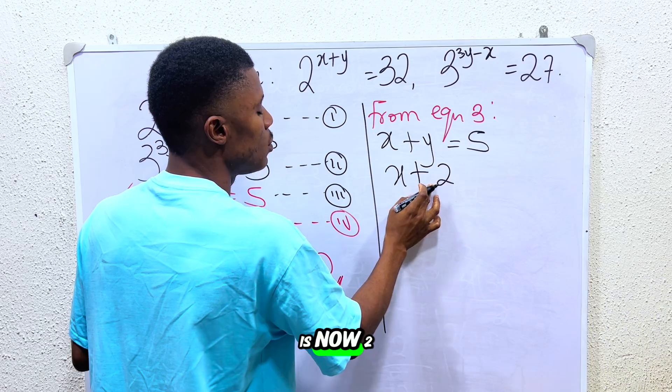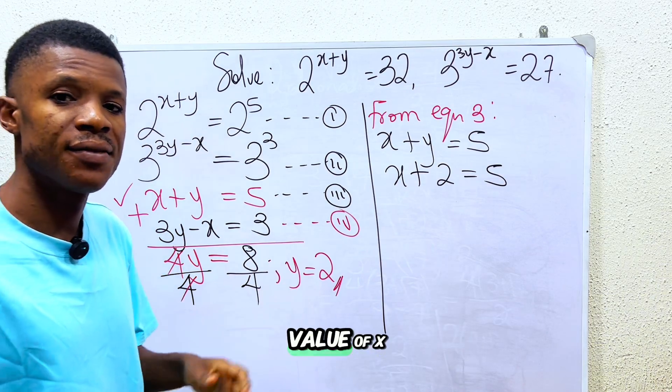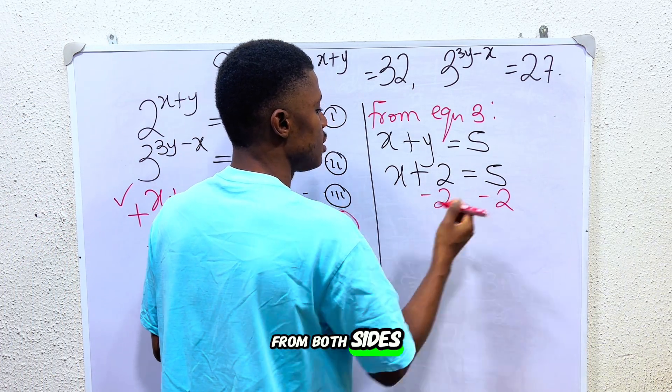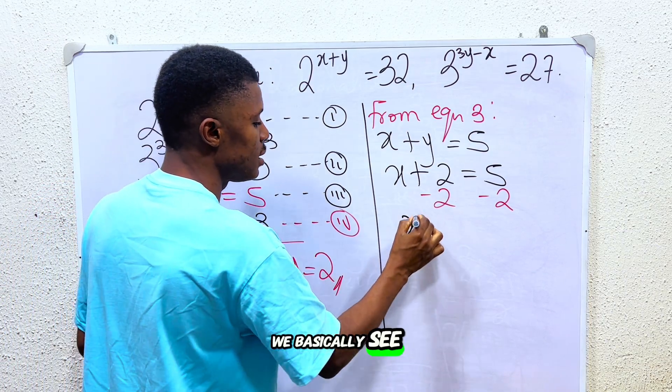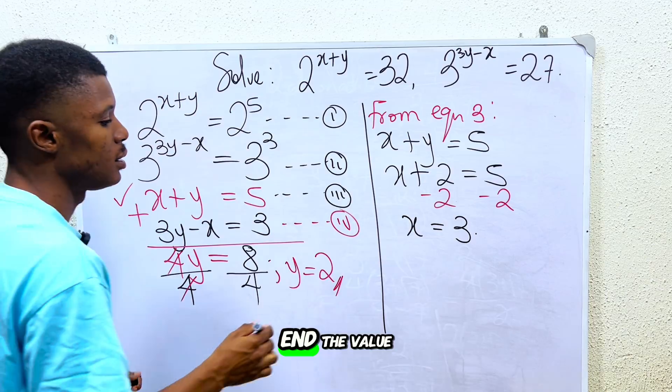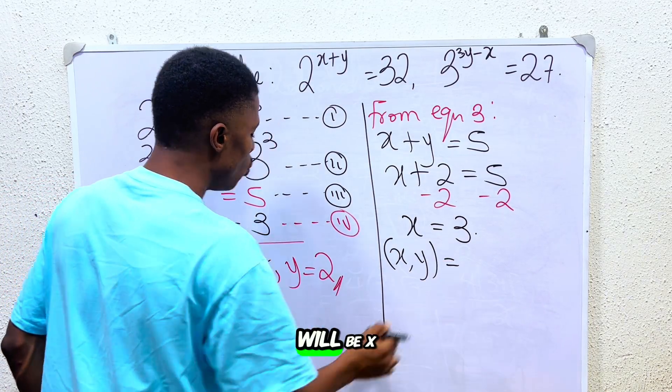2, because y is now 2, is equal to 5. So for us to get the value of x, we just have to subtract 2 from both sides. If we subtract 2 from both sides, we basically see that x is equal to 3.